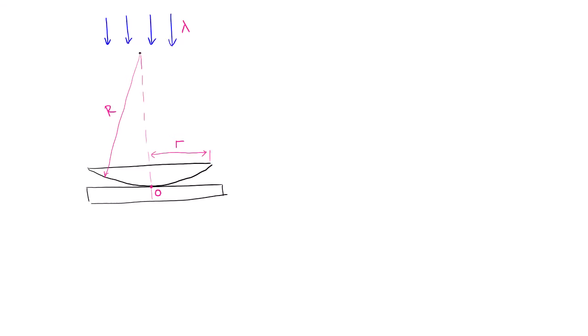In a Newton's ring experiment, a plano convex glass lens has a radius of r equals 5.00 centimeter and is placed on a flat plate. The lens has an index of refraction n equals 1.52 and when a light of wavelength 650 nanometers is incident normally,